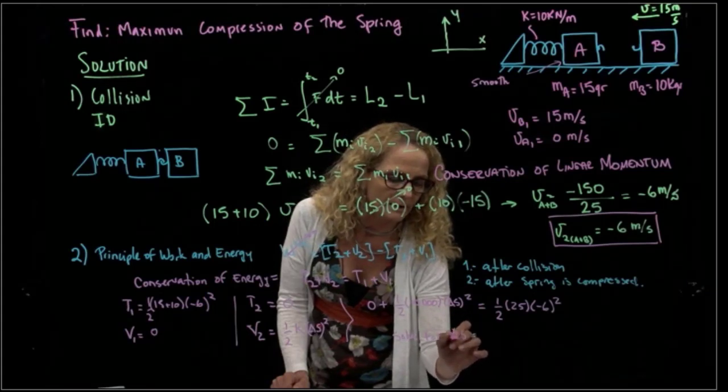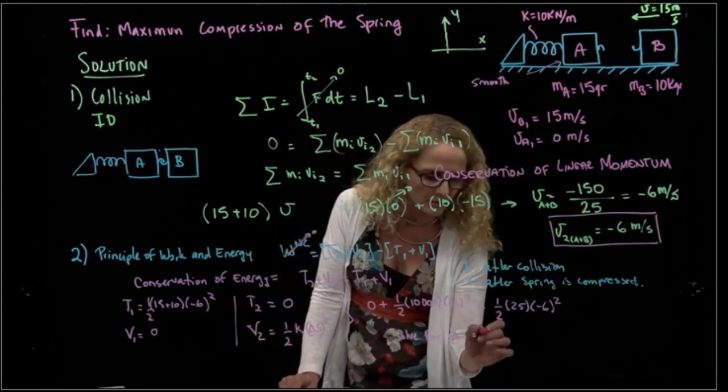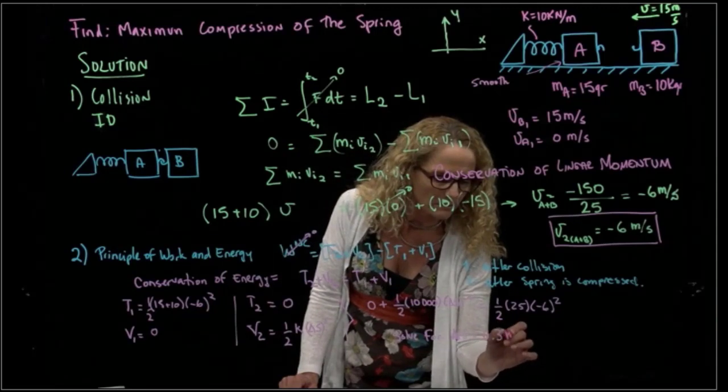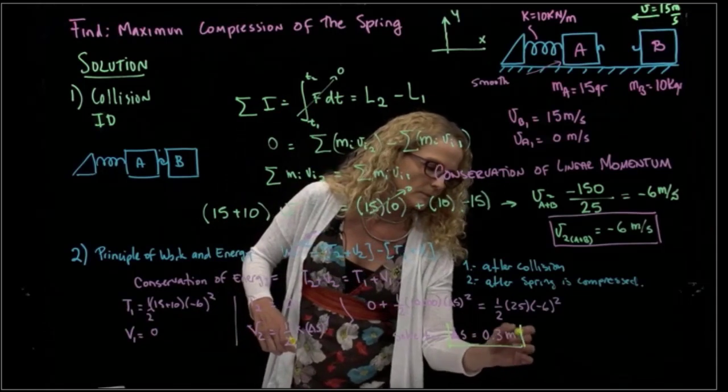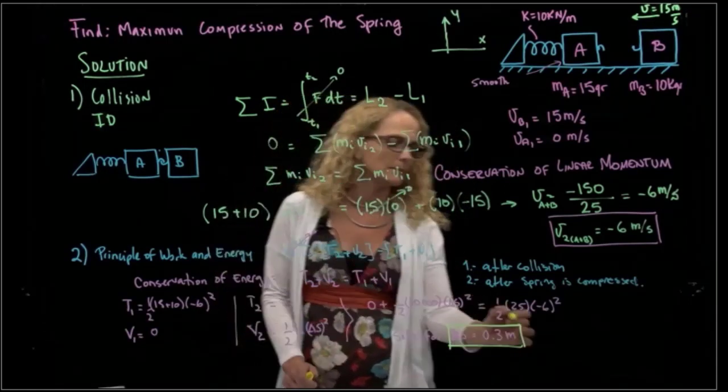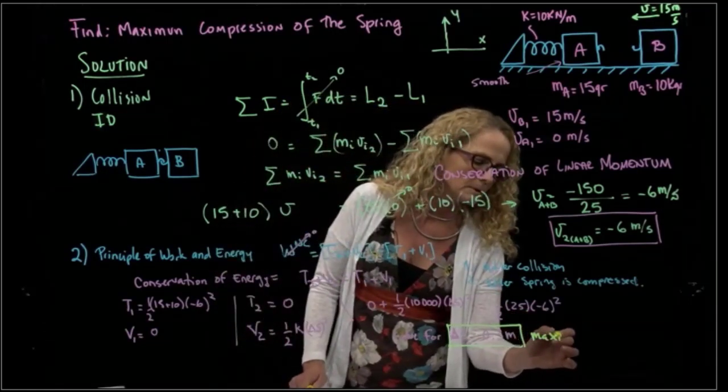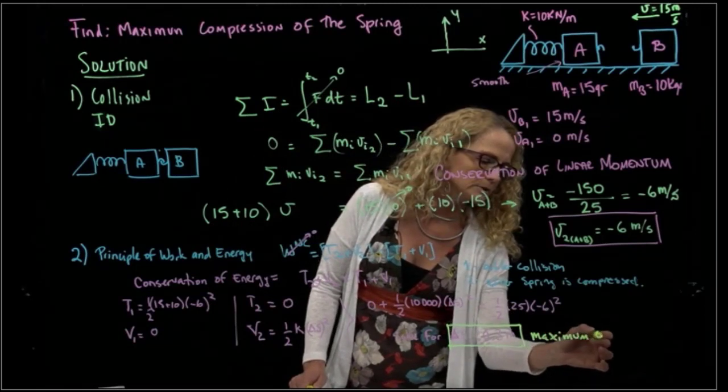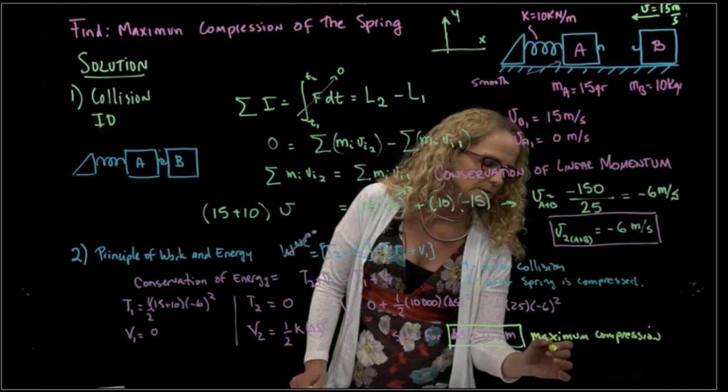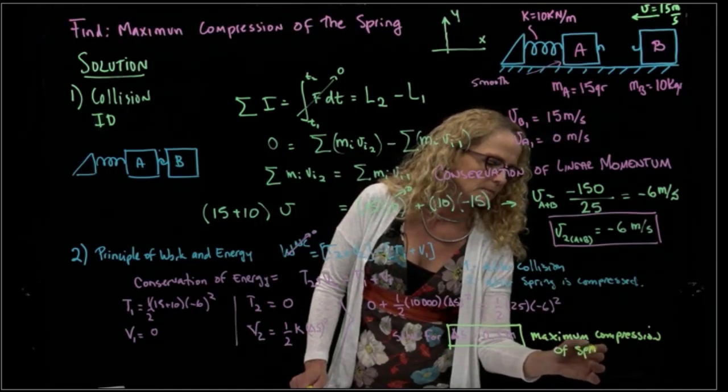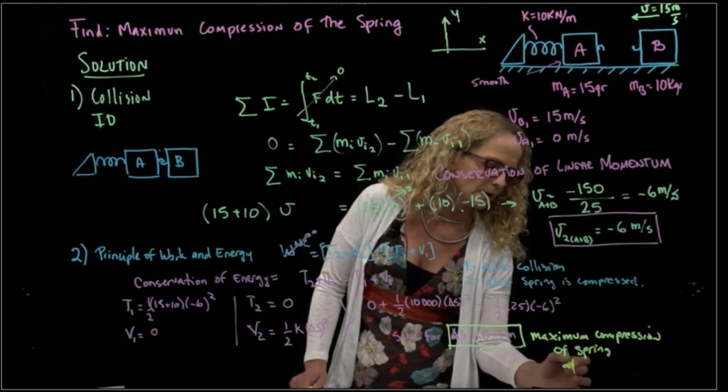And delta S is at least 0.3 meters. So at the end, we know that this is the maximum compression of spring after collision.